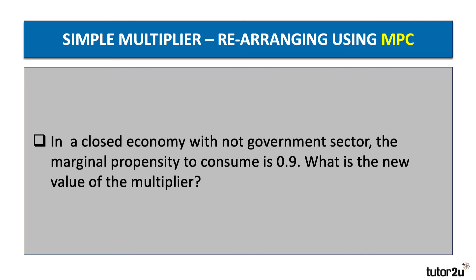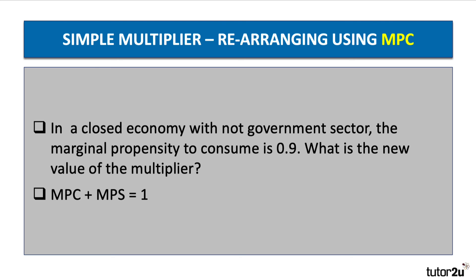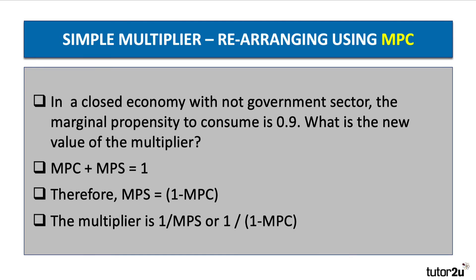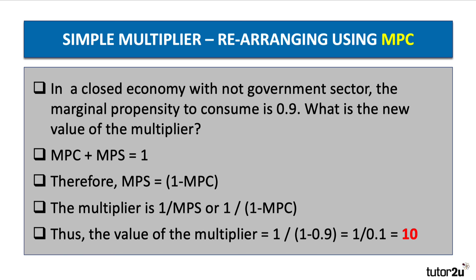Here's a rearranging example. In a closed economy with no government sector, the marginal propensity to consume is 0.9. What is the value of the multiplier? We know that MPC plus MPS equals one, so the marginal propensity to save is one minus the MPC — that's one minus 0.9, giving MPS of 0.1. Therefore, the multiplier is one over 0.1, which equals 10. We can use either formula to get the value of 10 — a high value because the propensity to save is only 0.1.